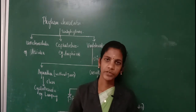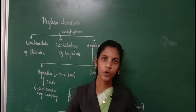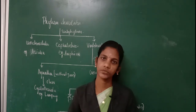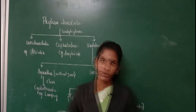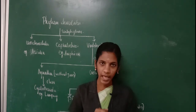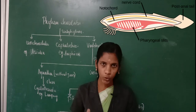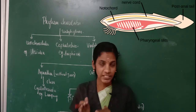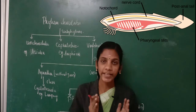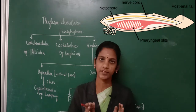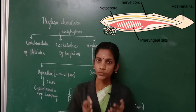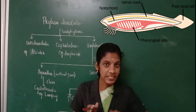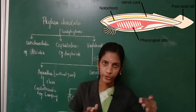Another important identifying feature of the phylum Chordata is the presence of nerve cord. If an organism has a dorsal hollow tubular nerve cord, we can classify that organism under phylum Chordata. This nerve cord can be seen just above the notochord.